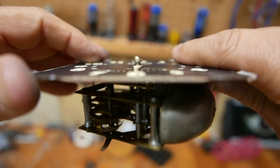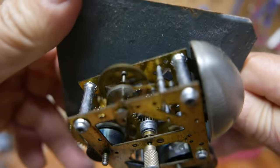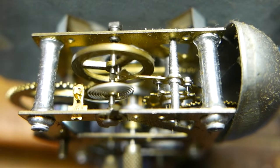In smaller clocks and watches, instead of a pendulum, the escapement is attached to a balance wheel. Here we can see it moving back and forth.